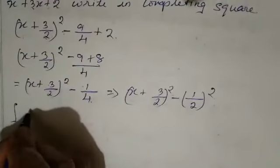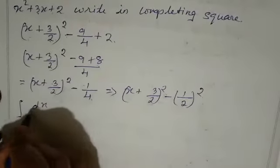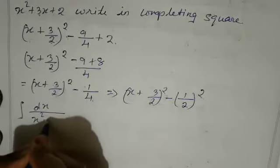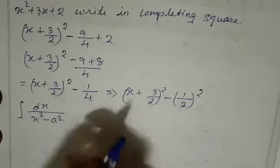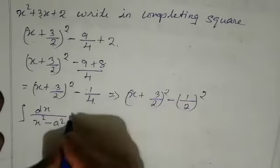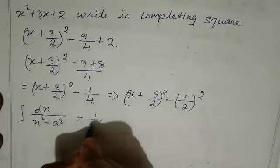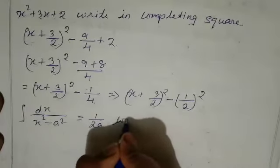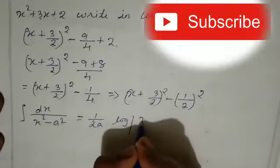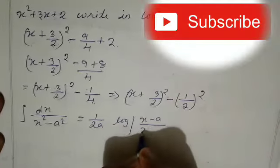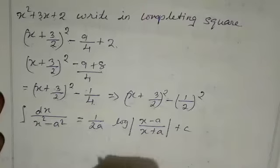Integration formula we can use is dx divided by x squared minus a squared equals 1 over 2a log of modulus x minus a divided by x plus a plus C.